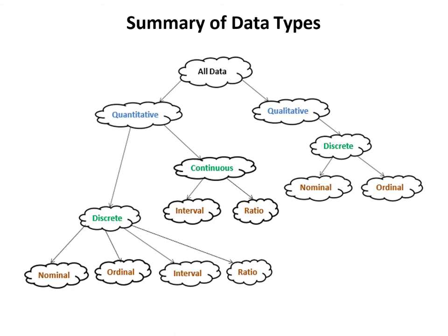We close this lesson by looking at a summary chart showing the overall classification of data. All data is either quantitative or qualitative. Qualitative data can only be discrete, whereas quantitative data can be discrete or continuous. Qualitative discrete data can be further broken down into nominal or ordinal. Quantitative discrete data can be any of the four types — nominal, ordinal, interval, or ratio — whereas continuous data can only be interval or ratio.